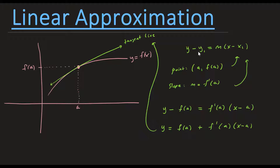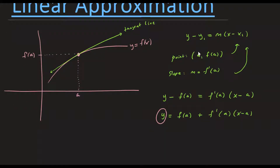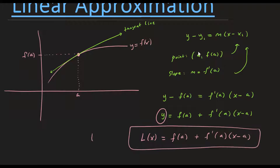With linear approximation, we simply call this tangent line the linear approximation, because it's a tangent line approximation and it's a linear line. So instead of calling it y, we're going to call it l of x for linear approximation. Changing notation: l of x equals f of a plus f prime at a times x minus a. This is what we call the linearization at a.